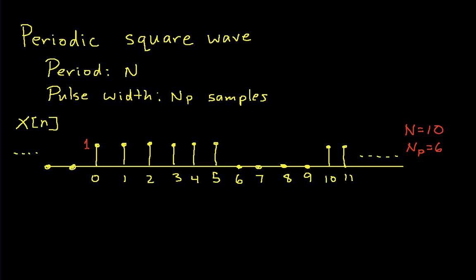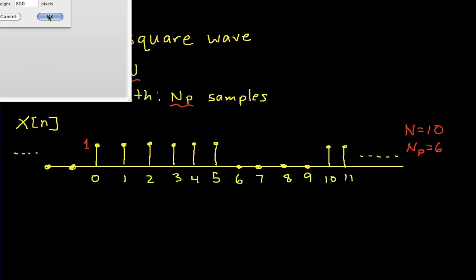We will do this for an arbitrary N and an arbitrary N_p, which makes the analysis a little more difficult, but it also makes the end result quite useful. The first thing we need to do is write down the equation for the Fourier series coefficients, and we'll just work through that equation and see what we get at the end. At the end, for those of you who just can't sit through the derivations, we have plots of the Fourier series coefficients for different values of N and N_p.